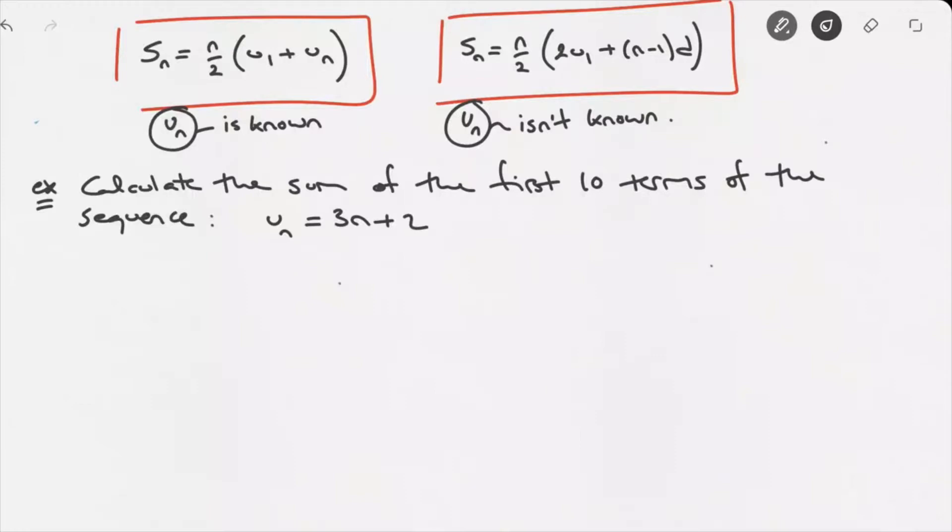Now to begin with, looking at this formula we've been given, this is definitely an arithmetic sequence. So we can go ahead and use our first formula. We'll use this formula simply because we've been given the arithmetic sequence's formula. So we can write, okay, we know that Sn equals n over 2 times u1 plus un.